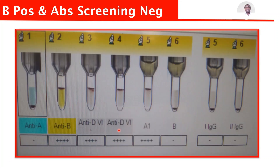This patient has antigen B because it reacted on anti-B, and it has antibody A because it reacted on the A1 cell. Then look at antigen D — it reacted on anti-D, meaning it has antigen D. Because of this antigen D, this person is B positive. And again, you can see the antibody screening is negative.